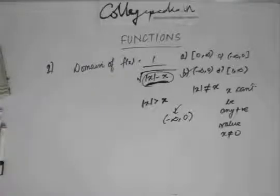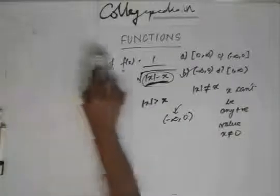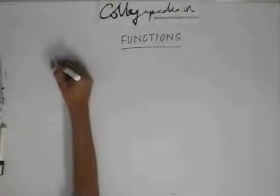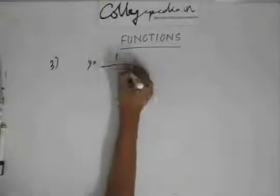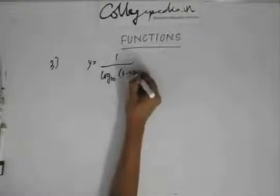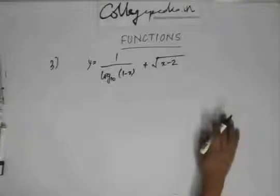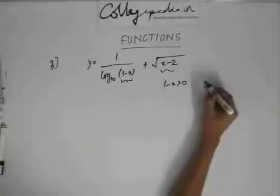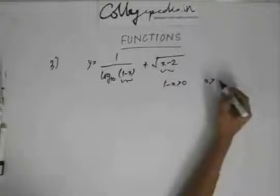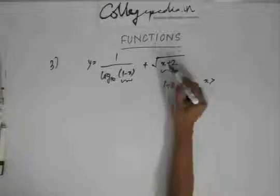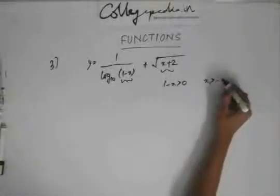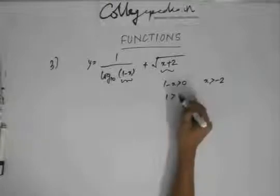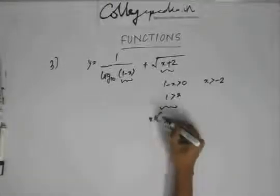Now the third question. The third question is again a simple question where it is asked to find the domain of the function. The function is log of 1 divided by log of (1 minus x), plus square root of (x minus 2). Now this has to be positive since it's a log function, and this also has to be positive. So my conditions are: 1 minus x greater than 0, giving x less than 1, so x belongs to minus infinity to 1. And x greater than minus 2, giving x belongs to minus 2 to infinity.